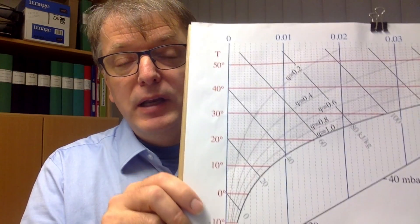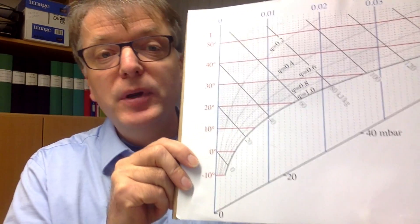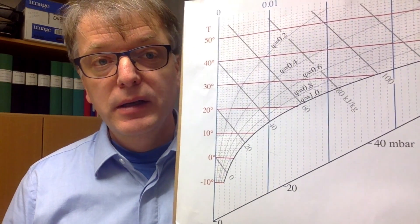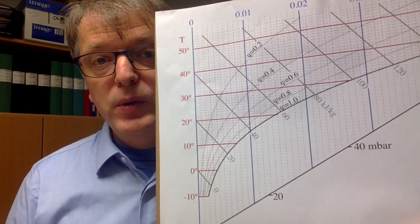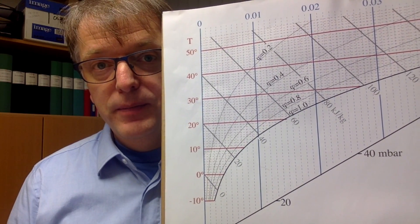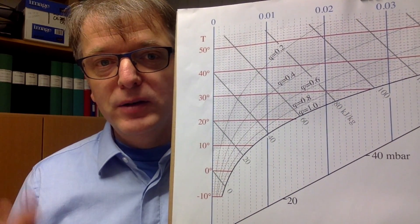Time to test yourself to see if you have been paying attention. If you have liquid water in equilibrium with moist air, how many degrees of freedom do you have? And where are you in this Moller diagram? Take a few minutes and answer that question.